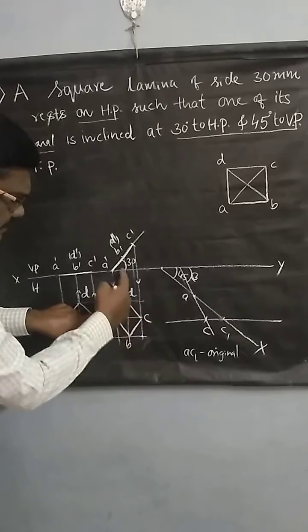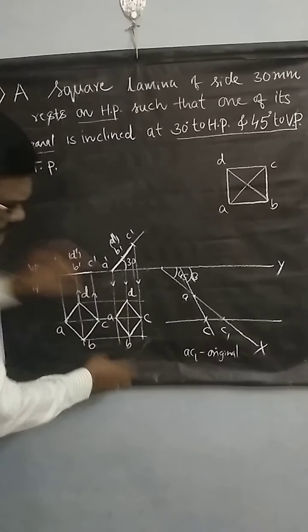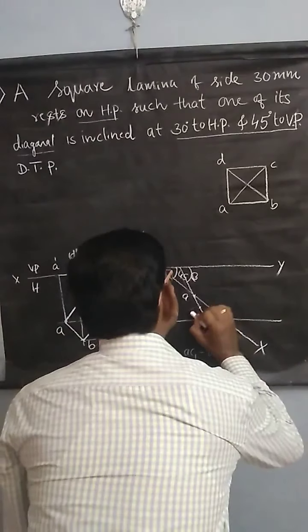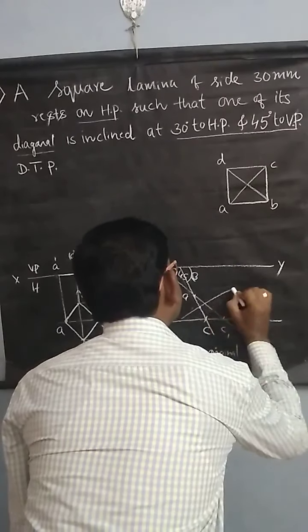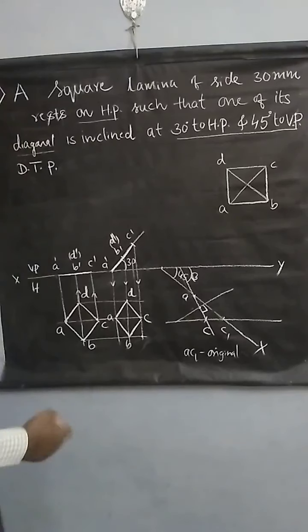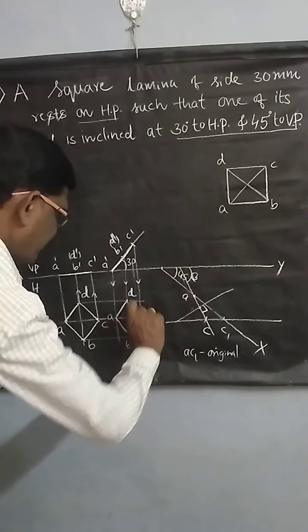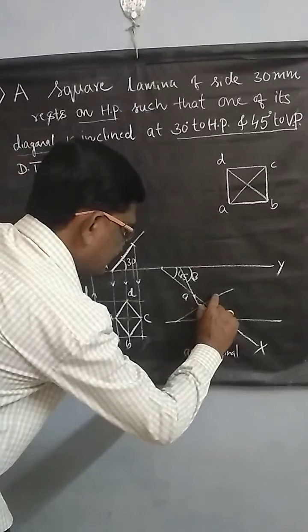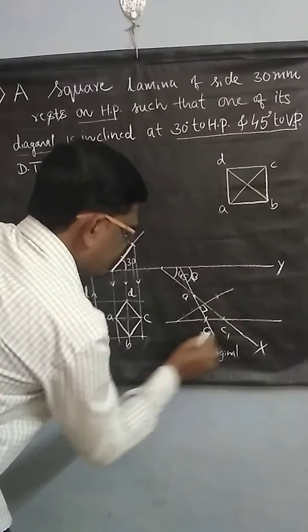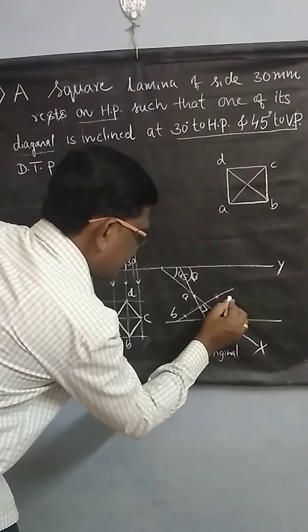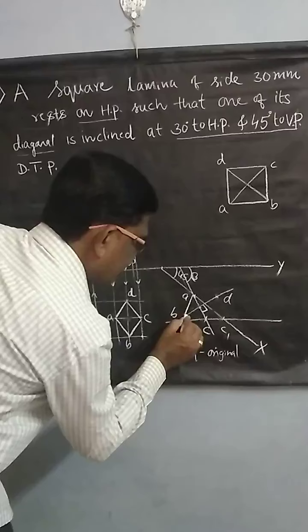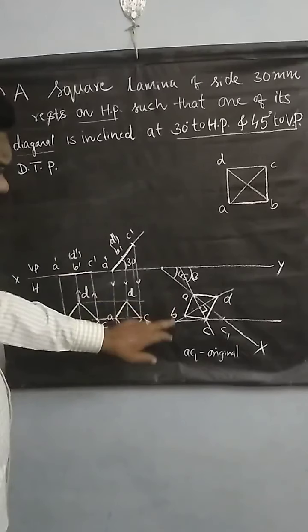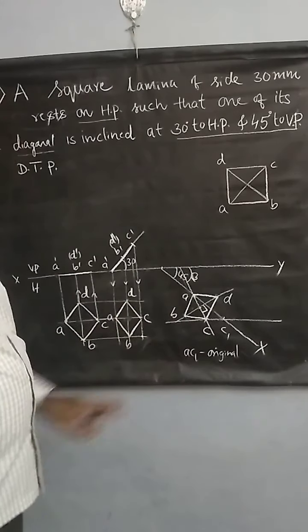You have to consider the diagonal AC. The diagonal AC is exactly perpendicular to the diagonal BD. That is why first you mark the center point of AC. You draw a line at this center point exactly 90 degrees. From this center point, you take the length from center to D and center to B — these remain the same. You mark these on both sides. This is point B and this is point D. You join A to B, B to C, C to D, and A to D. This is how we construct the secondary top view using the locus method.